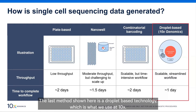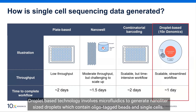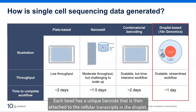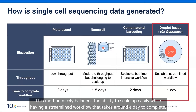The last method shown here is droplet-based technology, which is what we use at 10x. It involves microfluidics to generate nanoliter-sized droplets containing oligo-tagged beads and single cells. Each bead has a unique barcode that is attached to the cellular transcripts in the droplet. This method nicely balances the ability to scale up easily while offering a streamlined workflow that takes around a day to complete.